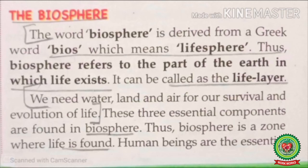We need water, land, and air for our survival and evolution. These three essential components are found in the biosphere: land means lithosphere, water means hydrosphere, and air means atmosphere. Together, these are the essential components of our life, so the biosphere is the zone where life is found.